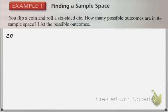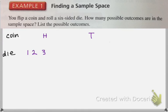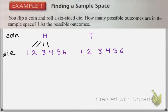So let's imagine we do a coin flip. There are two possible outcomes: heads or tails. Then we roll a die. If you flip heads, there are six possible options for your die. But if you flip tails, there's a different six options for your die. So if you count out all the possibilities, you have 12 possible outcomes.